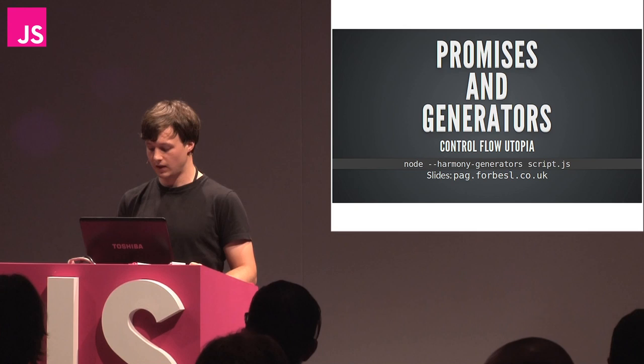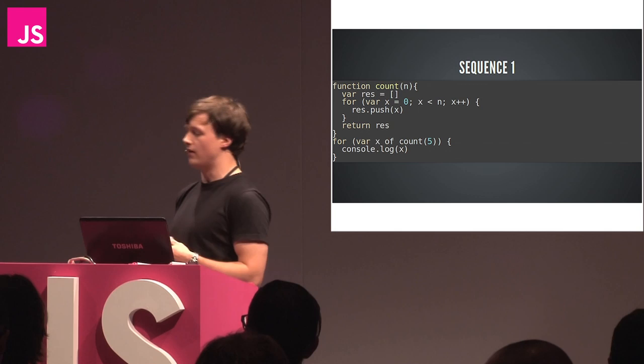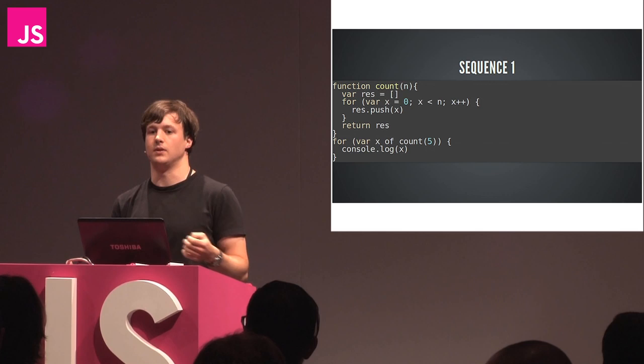I'm going to start off not really talking about promises, not really talking about asynchronous stuff at all, but talking about how you represent a sequence. If you've got a sequence of numbers - here we're talking about the integers - this function returns the first n integers as an array. That's really nice for representing finite sequences. Arrays work great for that.